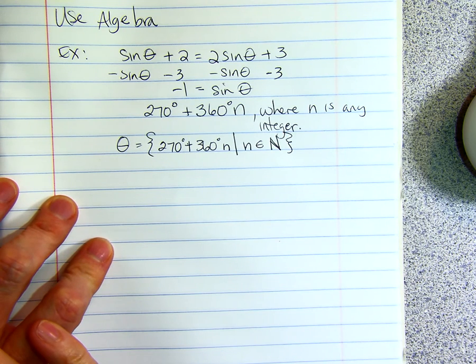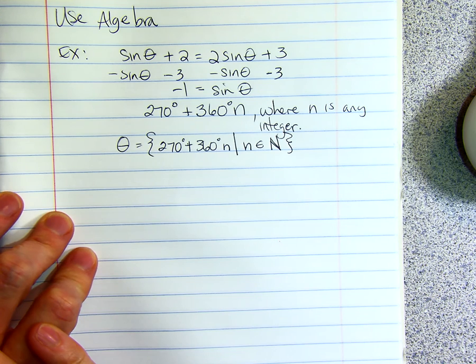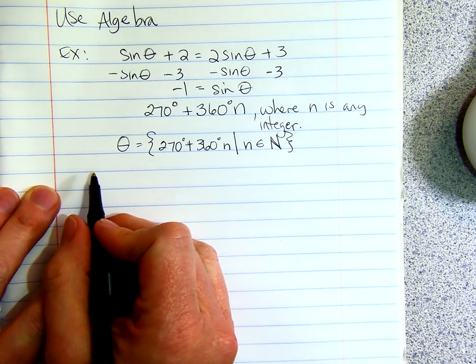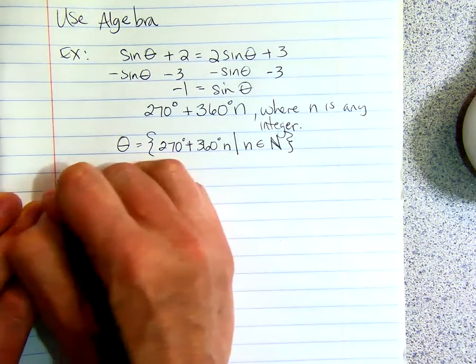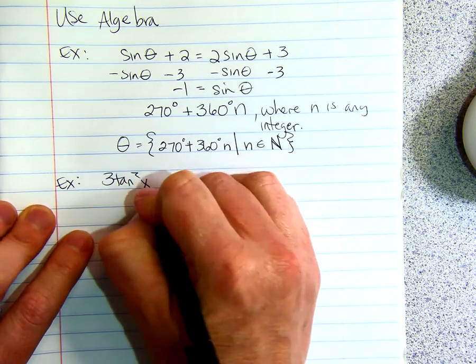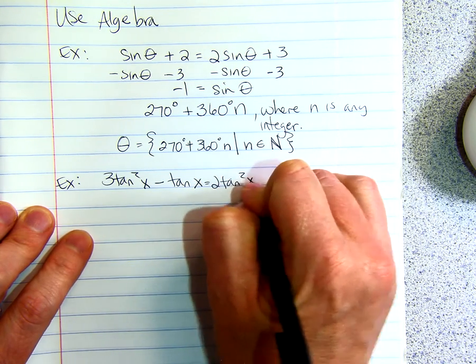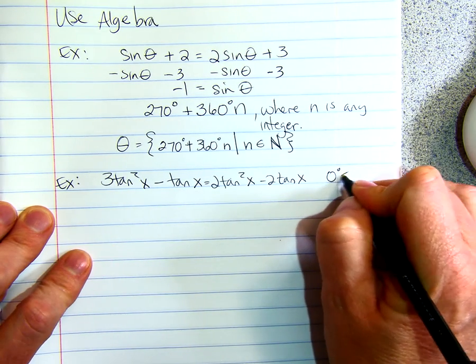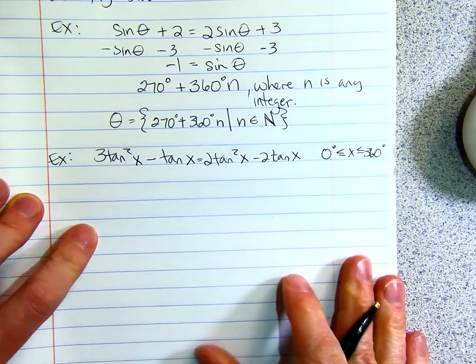I thought integers was Z. I think Z is. Okay. Why did I write? Oh, that's because my next example says 3 tangent squared X minus tangent X equals 2 tangent squared X minus 2 tangent X. And we want between 0 and 360 degrees. That way we don't have to add the N on the N.